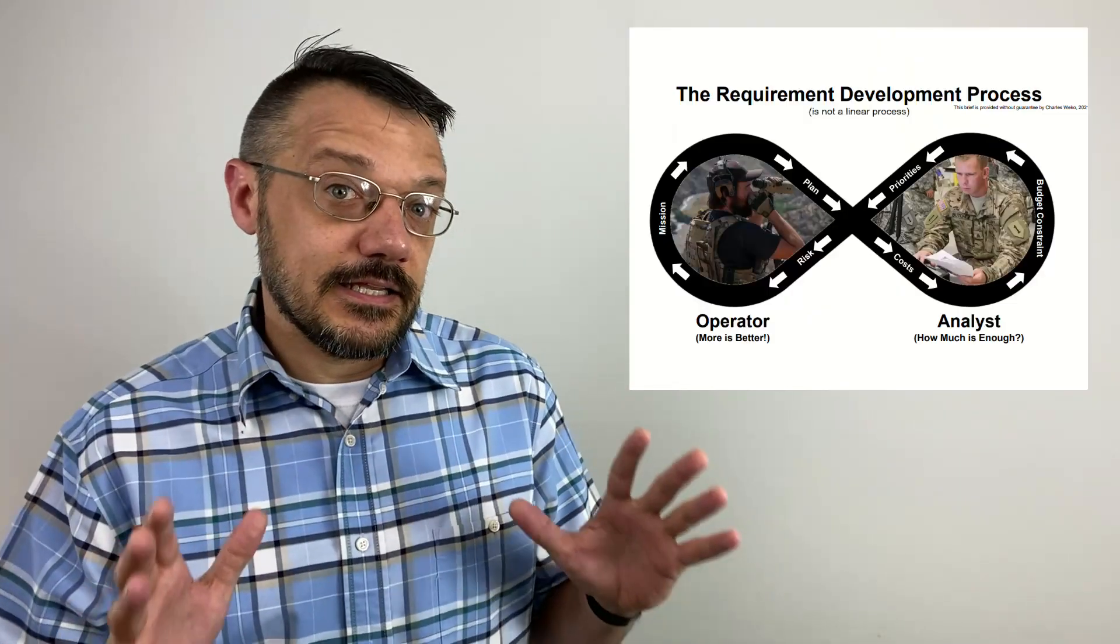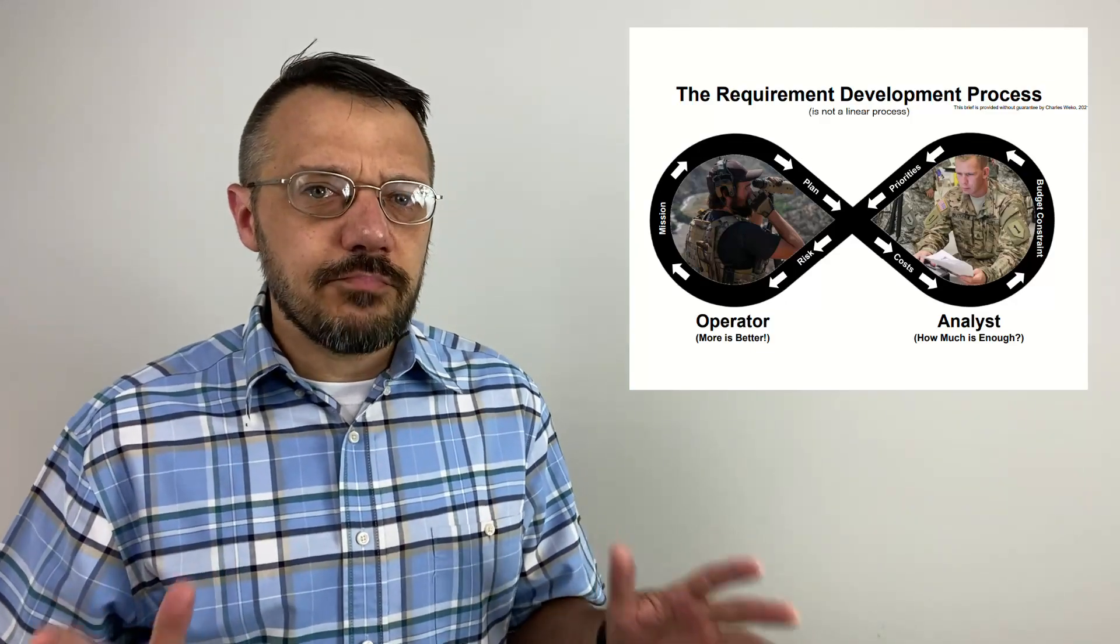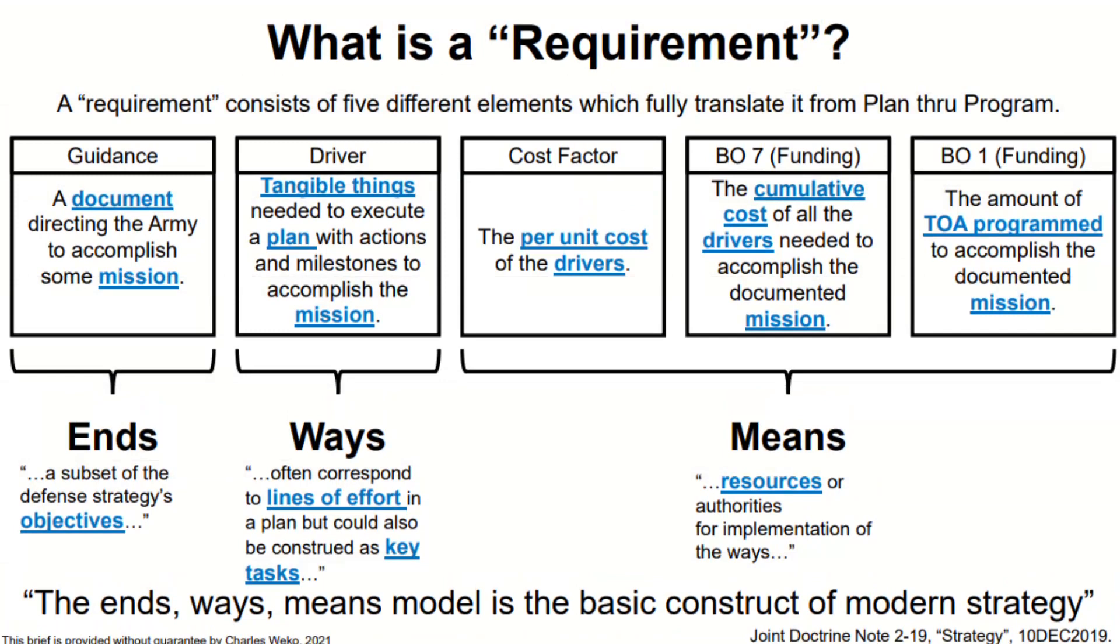So, if you're going to fully articulate a requirement through the PPBE process, you're going to need five elements. You're going to need the guidance. Usually some official document that told you to do the mission. You're going to need the drivers. Those are the necessary things that you need to execute a plan to successfully achieve the mission. And you need to be able to communicate the milestones and the actions that are necessary to complete that plan. Next, you need cost factors. Some per unit cost for those drivers. Then you total it all up. That is the amount of money that your command wants for the mission. And you need to know the documented funding that you're going to receive to do this mission. You don't want any nasty surprises.